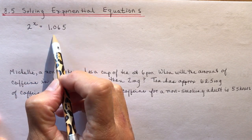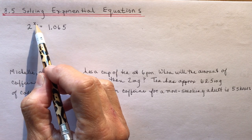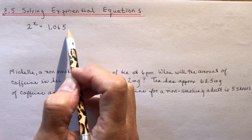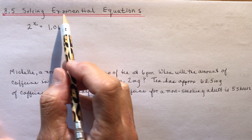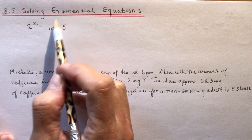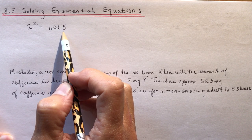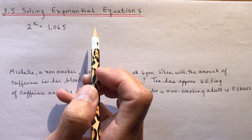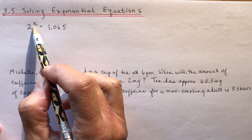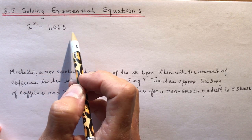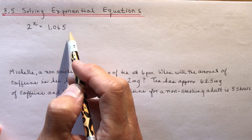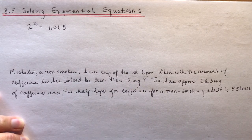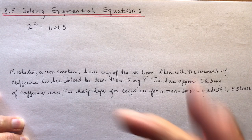You've probably seen a question like this before, where you end up with 2 to some power equals 1.065. You did some questions like this back in grade 11. You could use trial and error — 2 to the x equals 1.065, and since 2 to the power of 1 is already 2, you know x has to be less than 1. But we have a better way once you've learned logarithms: use your laws of logarithms.